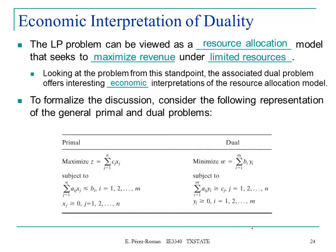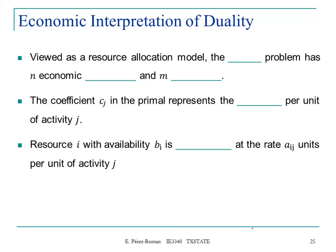Viewed as a resource allocation model, the primal problem has n economic activities and m resources. We have n activities and m resources, meaning that you have a capacity limitation in your resources.